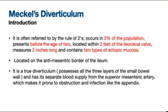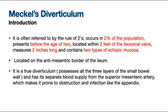It is located on the anti-mesenteric border of the ileum and is a true diverticulum, meaning it consists of all three layers of the small bowel wall. It has its own blood supply from the superior mesenteric artery, which in particular makes it vulnerable to obstruction and infection, similar to the appendix.